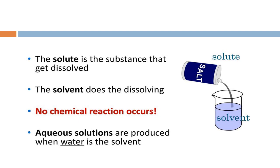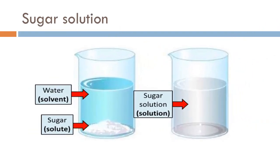When the solvent is water, the solution is called an aqueous solution. For example, water is the solvent present in more proportion, and salt is the solute present in less proportion. When we mix water and salt together, it gives us a salt water solution.